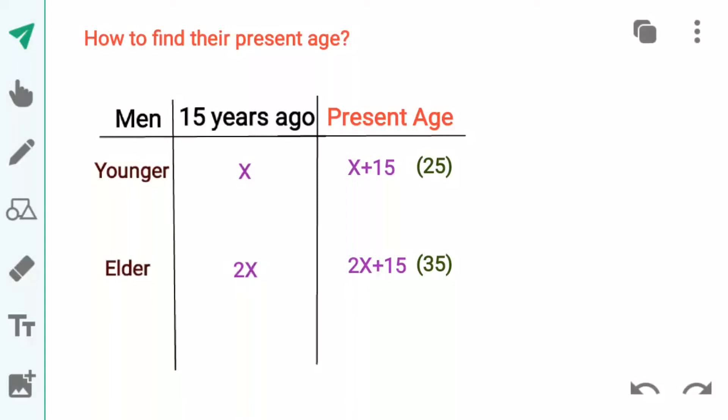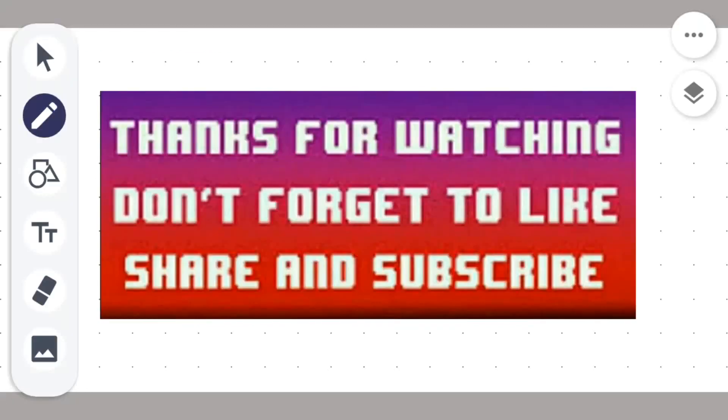Students, ab question hai how to find their present ages. Kyunki yahaan x 15 years ago ke liye liya hai, is liye present age banane ke liye dono ki age mein 15 add karengge. Toh younger ki present age 25 aur elder ki 35 nikalayegi.